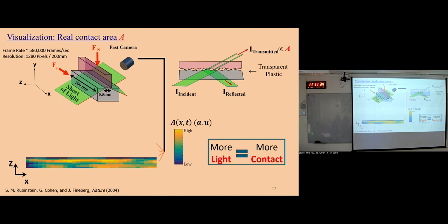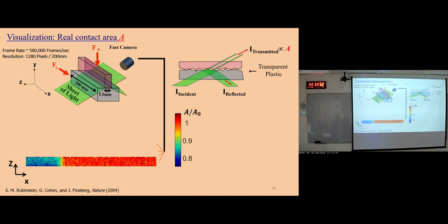Here I show a snapshot of the interface — it's pretty inhomogeneous at the micro scale. If we normalize the light before and after sliding happens, we find a clear boundary exists. On the left, the lower contact area is already broken; on the right, it's still in contact. The boundary is exactly the rupture front.